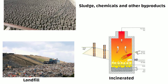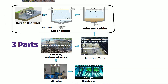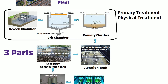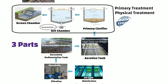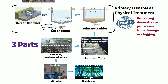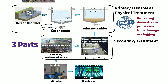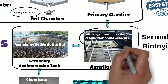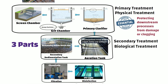This whole process is divided into three parts. From screening to primary clarifier, it is called primary treatment or physical treatment, where large and small solid particles are removed from the waste water — this is essential in protecting downstream processes from damage or clogging. From aeration tank to secondary sedimentation tank, it is called secondary treatment or biological treatment, in which microorganisms break down organic matter. Filtration and disinfection come under tertiary treatment, also called chemical treatment.